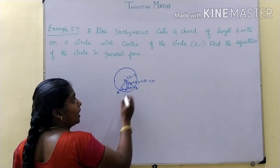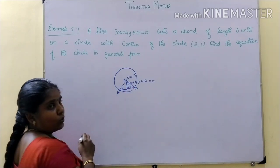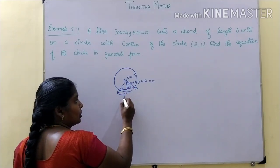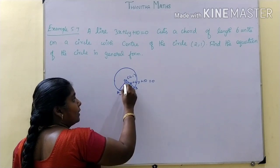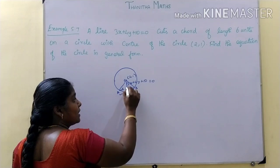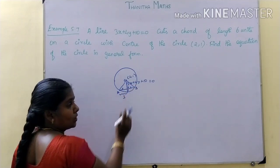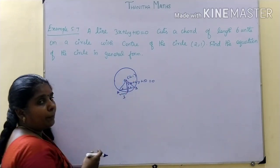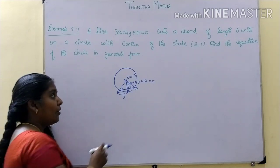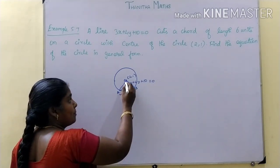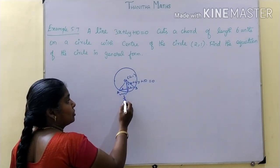AP is 3 units, since the line from the center is a median. So the half-chord length is equal to 3 units. And CP — the distance from center C to the chord — we know the line equation. If you use perpendicular distance, we can find the distance CP.